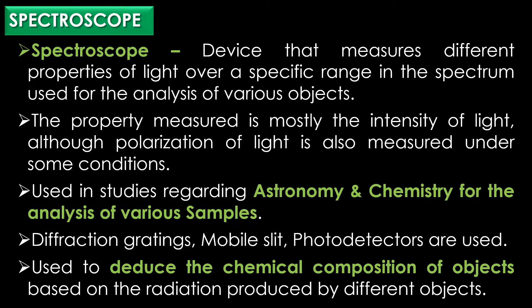Traditionally, prisms were used as spectroscopes. However, nowadays diffraction gratings, mobile slits, and photodetectors are used. Spectroscopes are mostly used to deduce the chemical composition of objects based on the radiation produced by different objects.